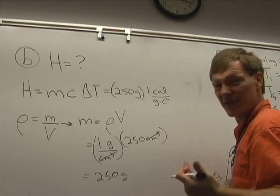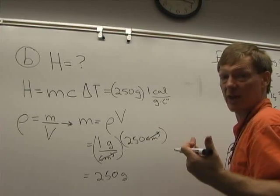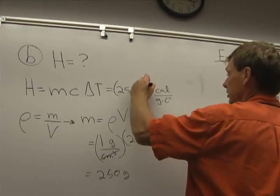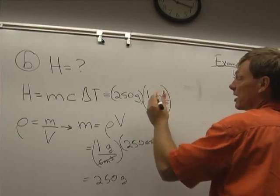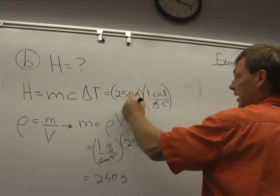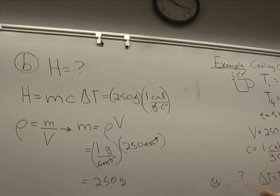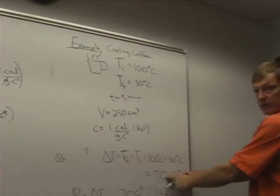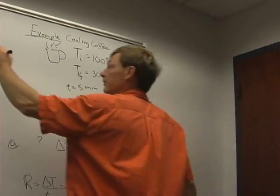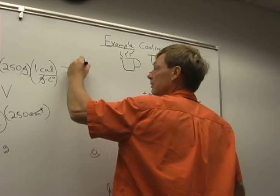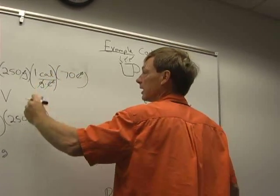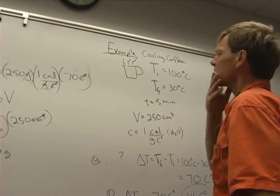It only takes like a fifth of a calorie to raise a gram of air one Celsius degree, because it doesn't store the energy the same way. Grams cancel. The temperature difference from here is 70 Celsius degrees. I already calculated that. Celsius degrees cancel.